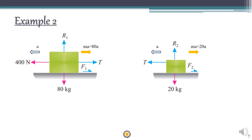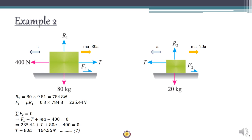R1 equals weight = 80 × 9.81 = 784.8 N. Friction F1 = mu × R1 = 0.3 × 784.8 = 235 N. Taking sigma F in the horizontal direction equal to zero for body A: F1 + T + 80·a − 400 = 0. This gives the first equation in terms of T and acceleration as unknowns.